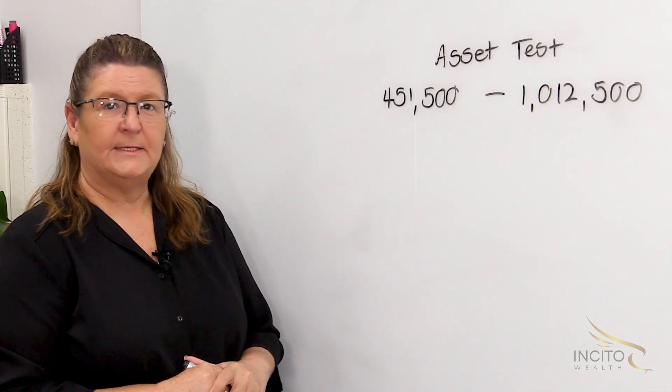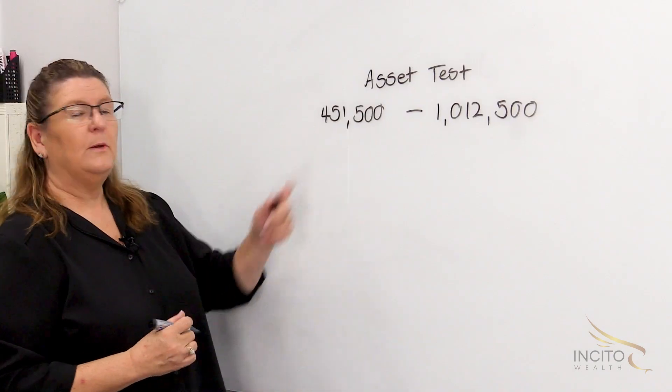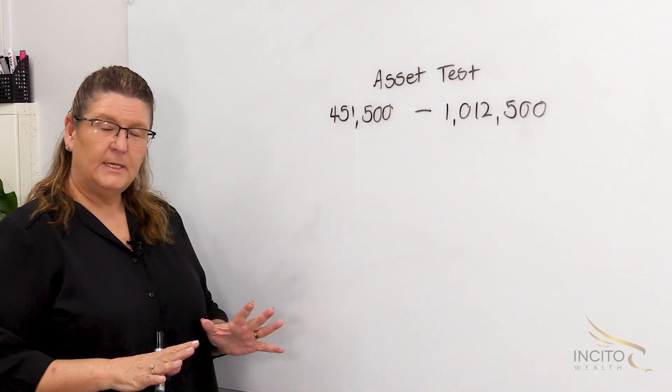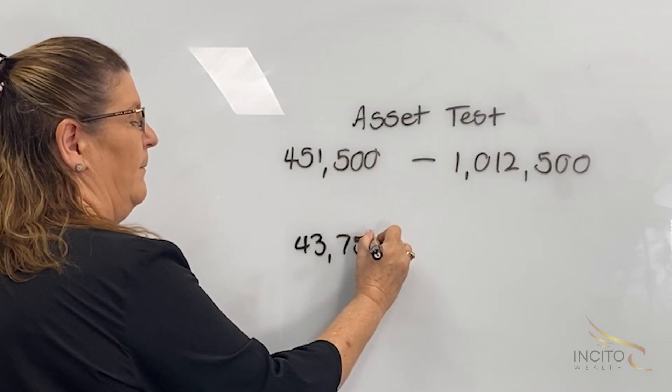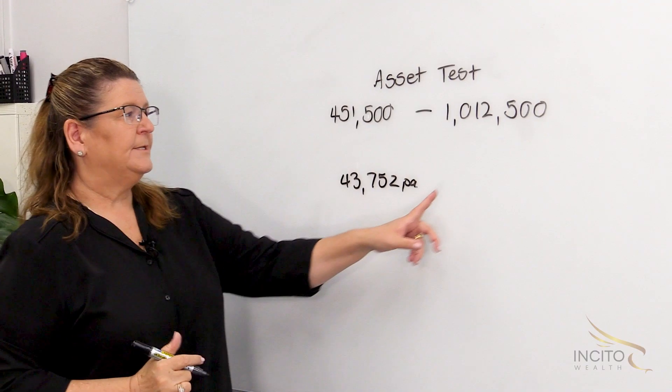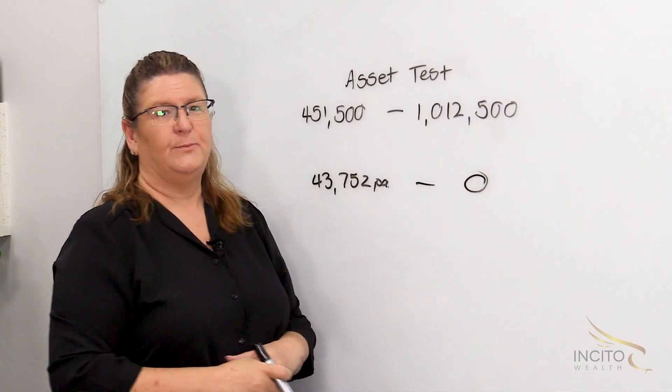These are the level of assets for a homeowner couple. As you can see, $451,000 in assets, not including the house, means that you'll be eligible for the full age pension per year. As it goes up to a million dollars, you're going to get no age pension at all.